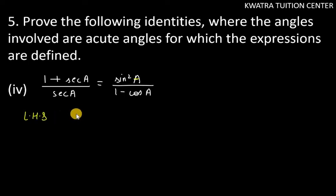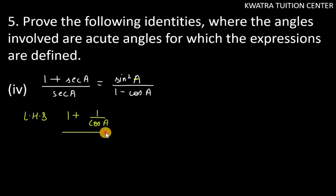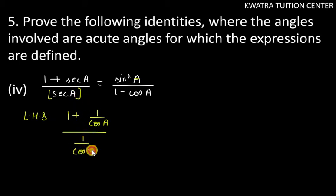Left hand side solve karte hai. Left hand side pe humare paas hai sec(a). Sec(a) ko aap kaise denote kar sakte ho? You can write it as 1 over cos a. So it will be 1 over cos a. Again, neche bhi hame sec(a) hai, so sec(a) ko likhte hai 1 over cos a. Ab yahaan pe numerator mein hame LCM lena paas hai, so LCM will be cos a.